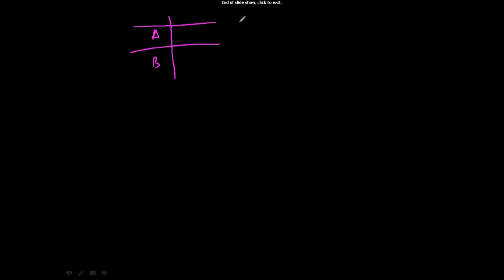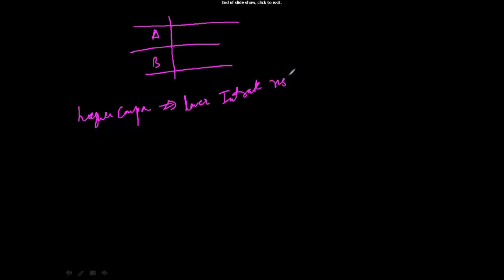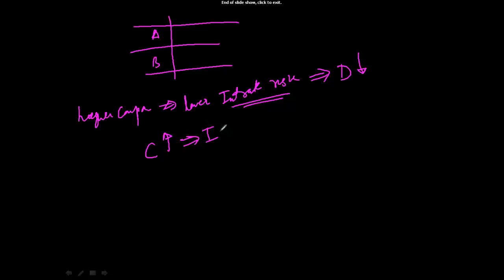So let's say you have two bonds, bond A and B. What we say is higher coupon implies lower interest rate risk. So when you have lower interest rate risk, that means you have lower duration. So a bond having a higher coupon will have lower interest rate risk, which implies it will have lower duration.